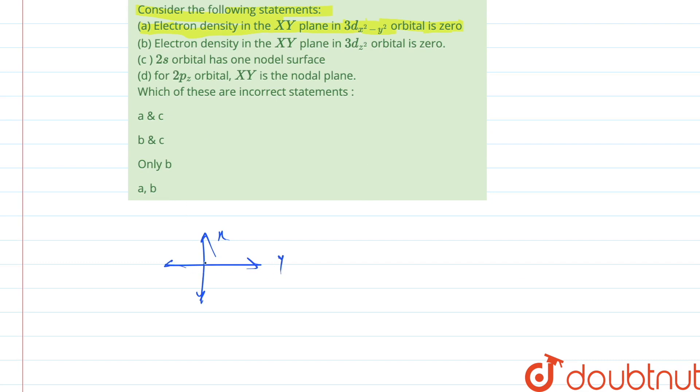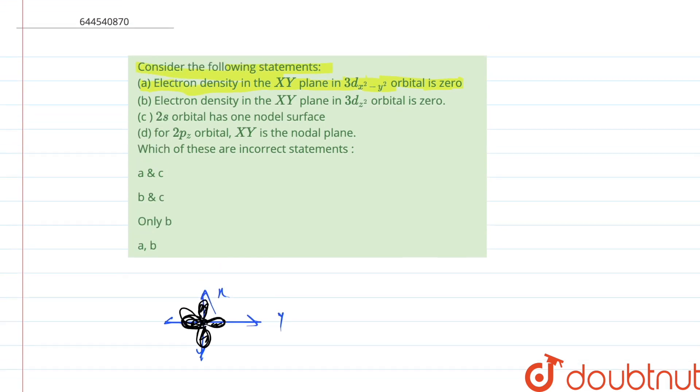the dxy, x square y square is somewhat like this. So therefore in the xy plane it has maximum electron density. So therefore part a is incorrect.